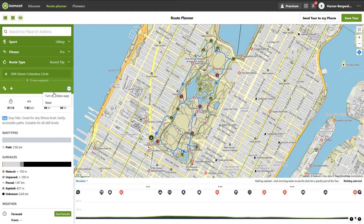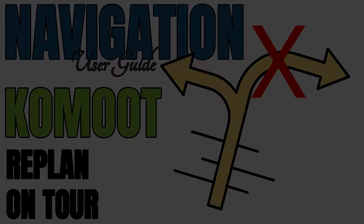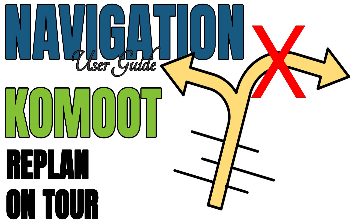You may also reset the planned tour to clear all waypoints and the route at once. And if your plans change along the way, simply replan the tour on tour — I showed you that in the tutorial 'Komoot Replan on Tour'. The link is displayed in the top right and also in the video description.